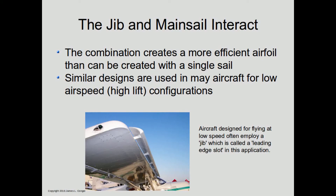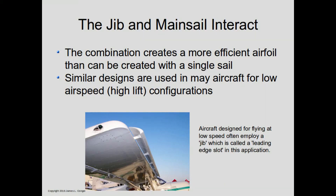Sailors aren't the only people to take advantage of airfoils in multiple sections. Many aircraft use two, three, or even four different wing sections to get desirable effects. Here's a simple example of a light plane with, in effect, a jib ahead of the mainsail — called a leading edge slot. The result is that this plane can generate high amounts of lift at high angles of attack, which is very desirable for taking off and landing on short airstrips.